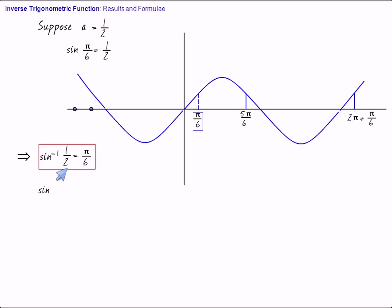And from here itself, sine inverse minus half is also evident. You see that minus pi by 6 is the nearest angle or real number whose sine is minus half. Though there are infinitely many values of x for which sine is minus half.